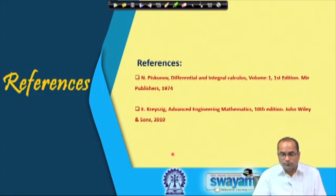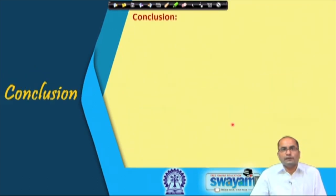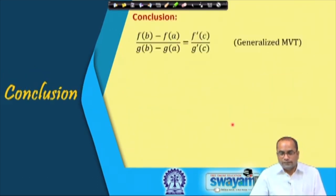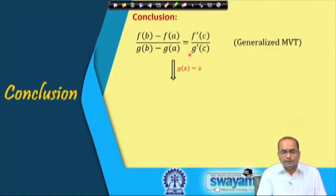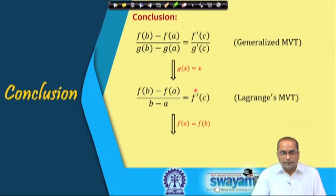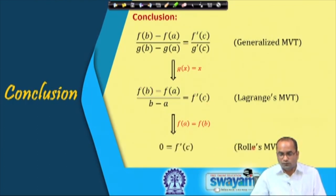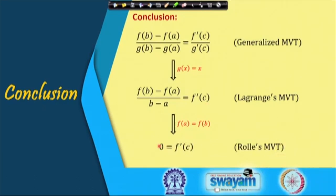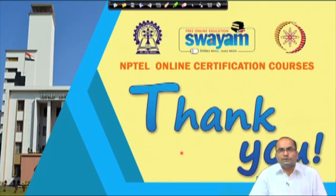References used: Piskunov's Differential and Integral Calculus and Kreyszig's Advanced Engineering Mathematics. In conclusion, today's lecture covered the generalized Cauchy mean value theorem, from which the Lagrange mean value theorem follows as a special case when g(x) = x, and Rolle's theorem follows further when f(a) = f(b). Thank you for today's lecture.